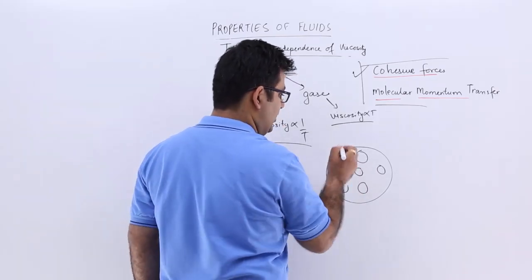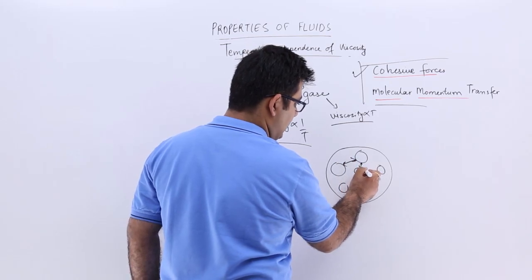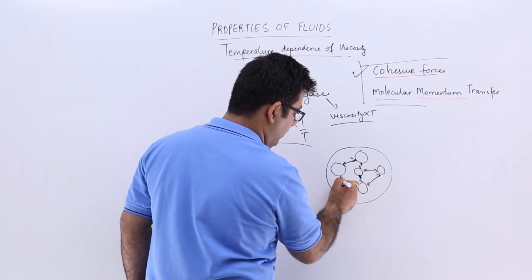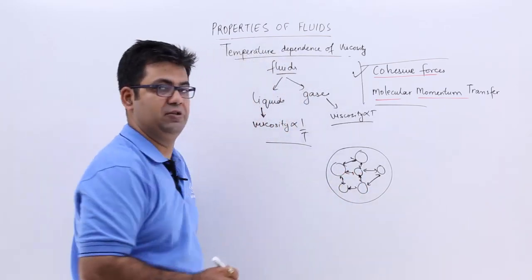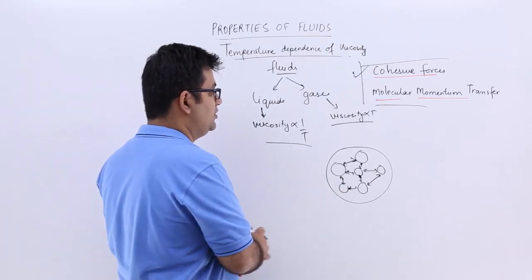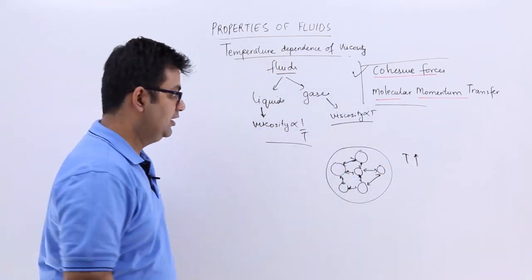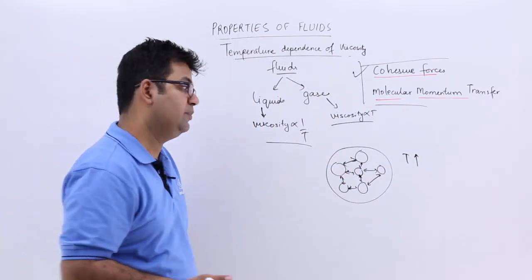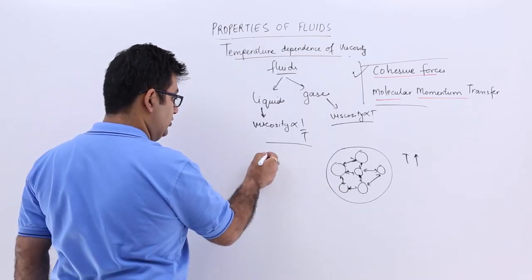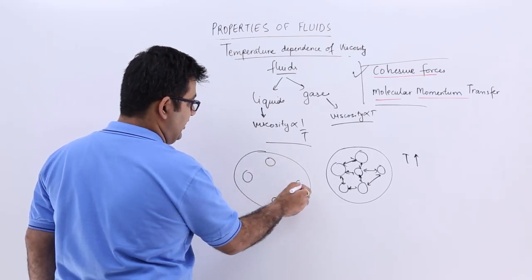So the cohesive forces between these molecules is greater, which prevents them to move away from each other on a very frequent basis. So the random motion in these molecules is less. When you start increasing the temperature, these cohesive forces will reduce. If I take another example at a higher temperature, that sample will have less molecules in the same volume.